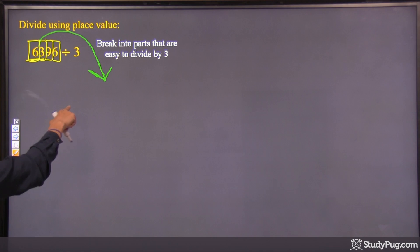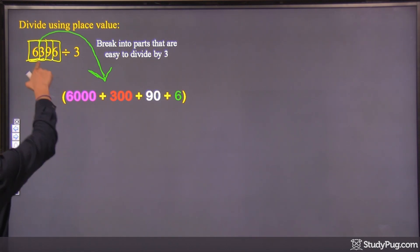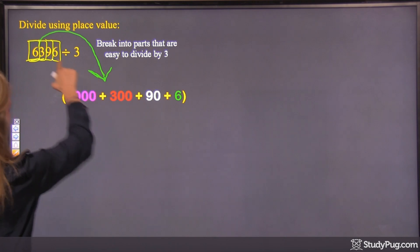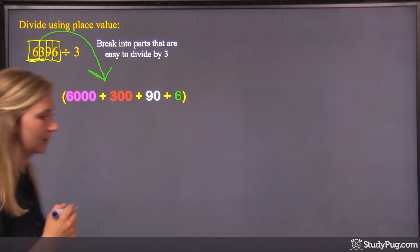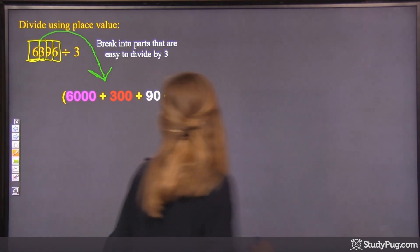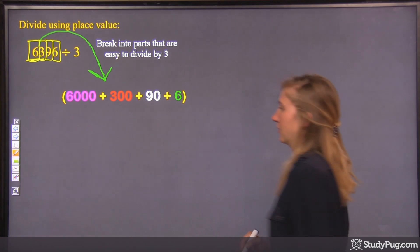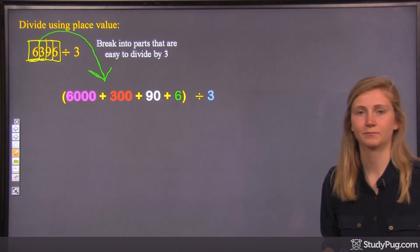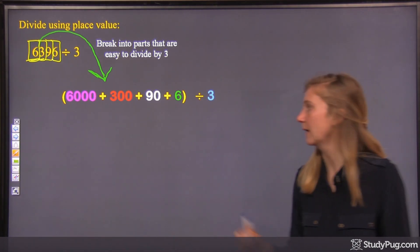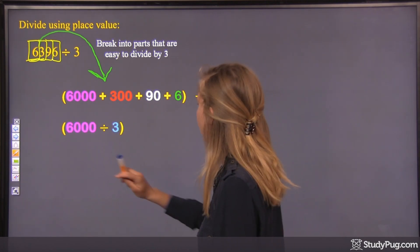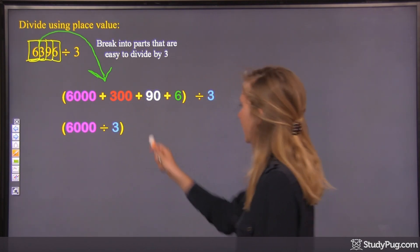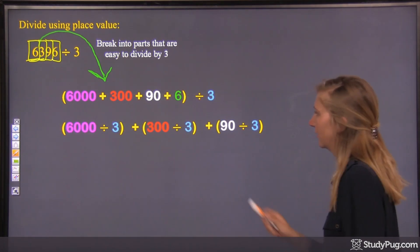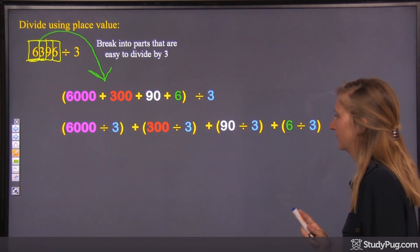Split it up into 6,000 plus 300 plus 90 plus 6. Make sure you've figured out the right place value for those numbers. And then they all get divided by 3 — so 6,000 gets divided by 3, 300 gets divided by 3, 90 gets divided by 3, and 6 gets divided by 3.